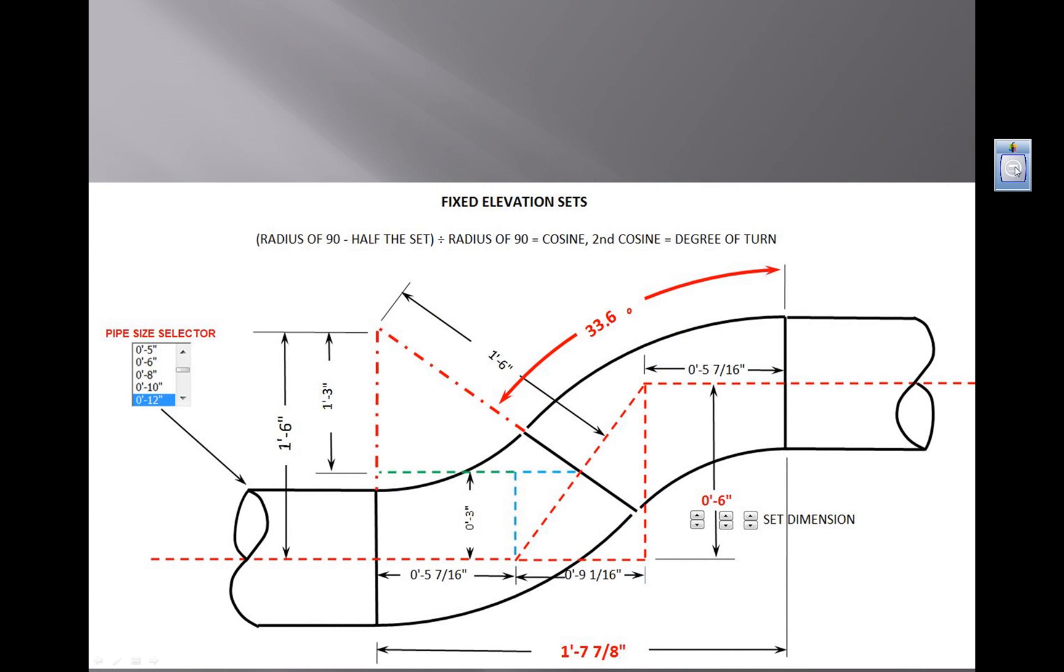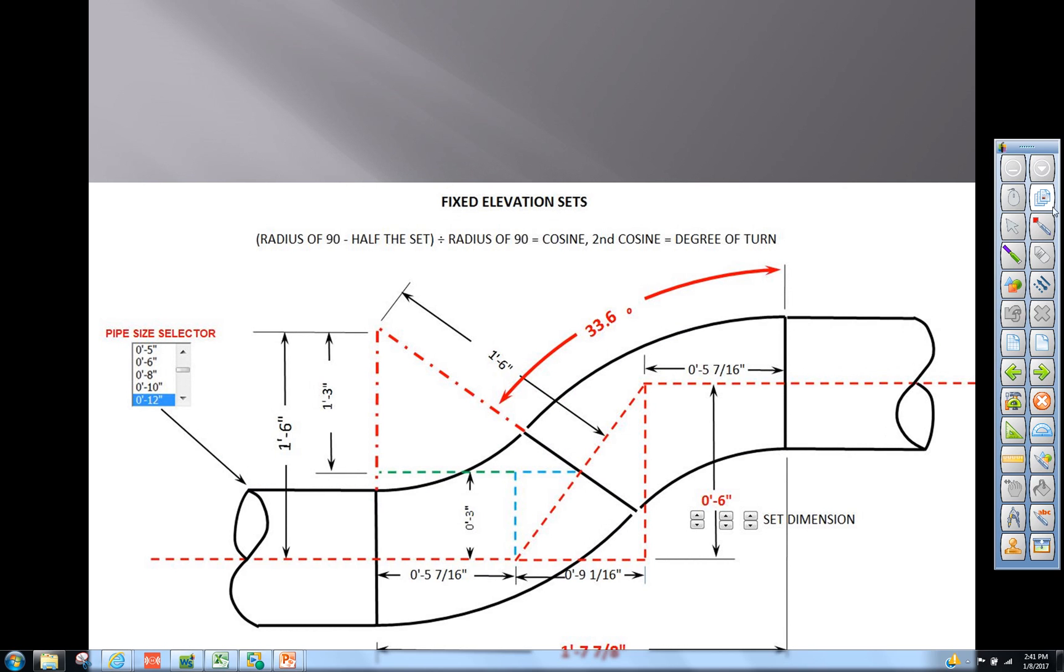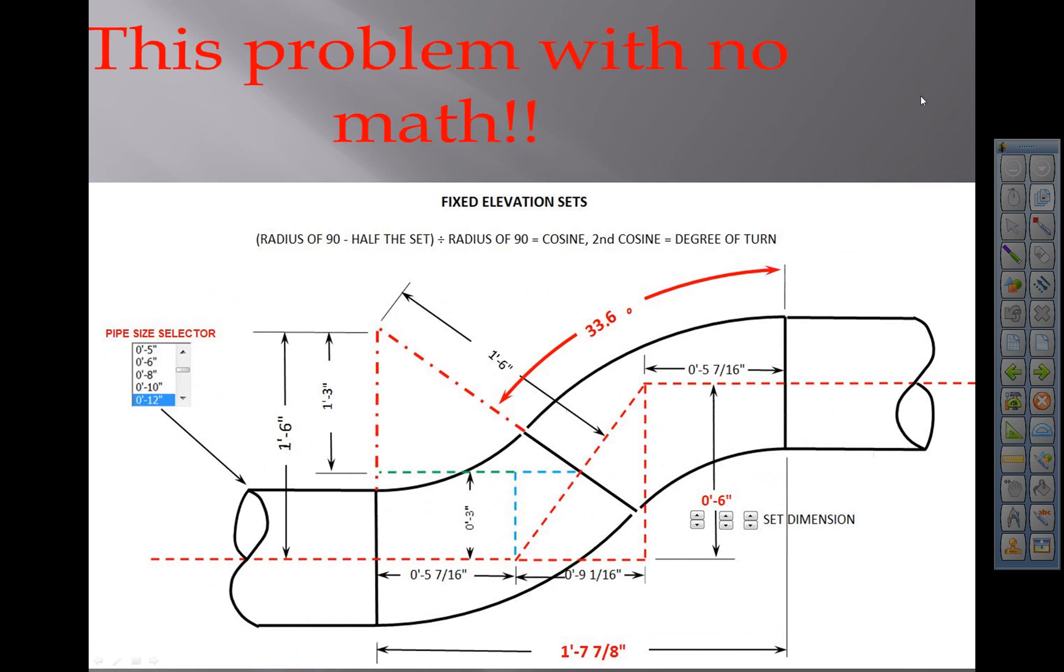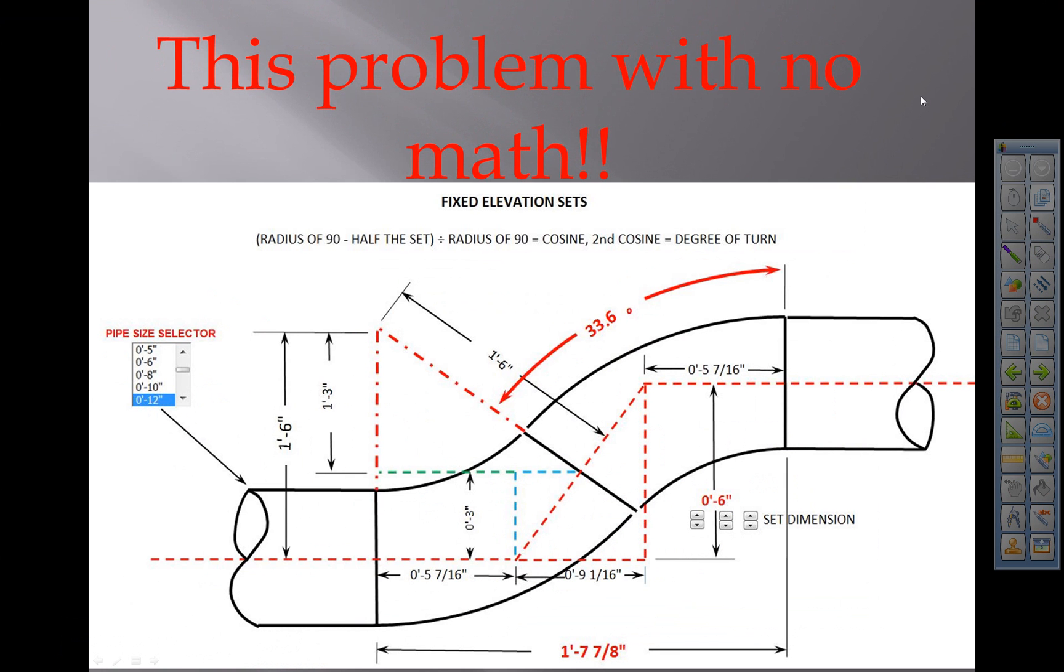Here you can see we have a fixed elevation of 6 inches, and we're using a 12 inch pipe, and we only have one weld. We're going to do this problem with no math.